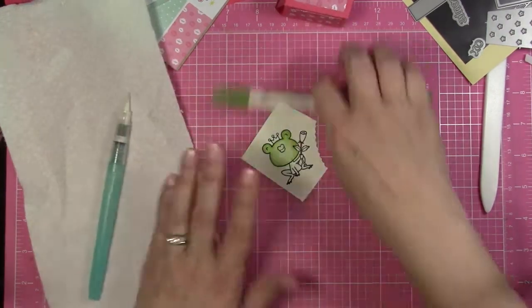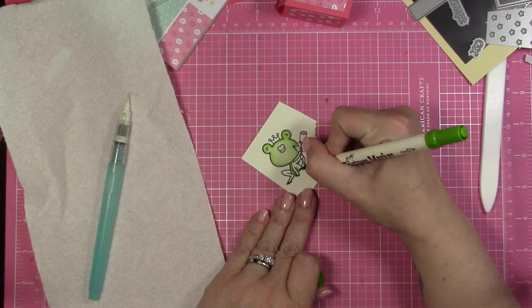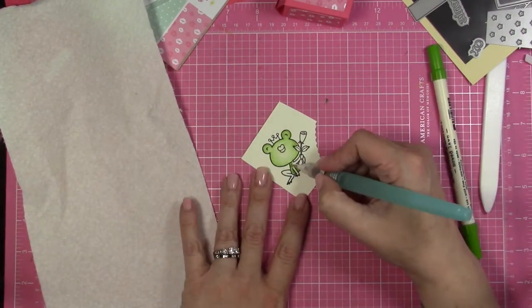So I'm going to go ahead and color that in. Then once I have my first layer done, I'm going to go ahead and heat set with my heat tool. And then I'm going to go ahead and color the additional pieces as well.